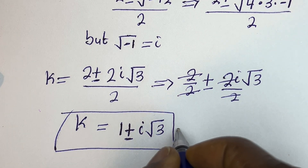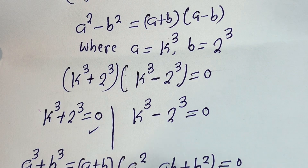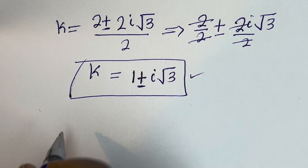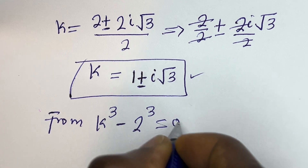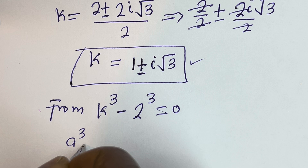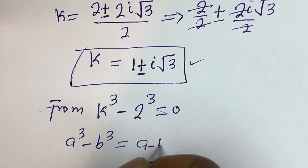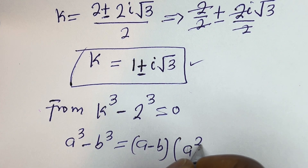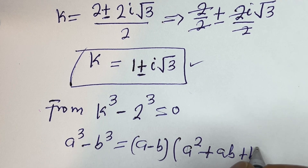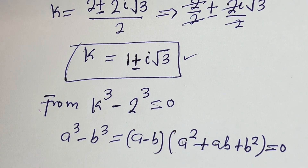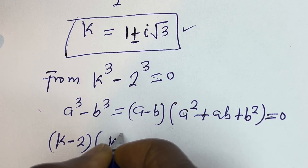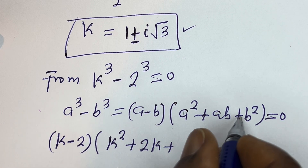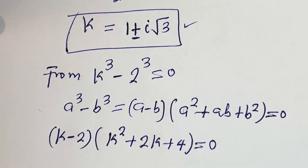Now let's consider the second case: k to the power of 3 minus 2 to the power of 3 equals 0. Recall that a cubed minus b cubed equals a minus b, times a squared plus ab plus b squared, all equal to 0. This becomes k minus 2, times k squared plus 2k plus 4, equals 0.